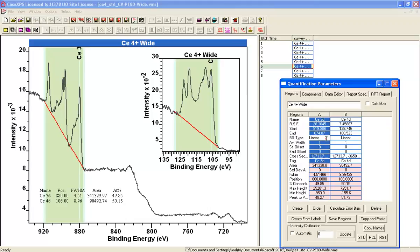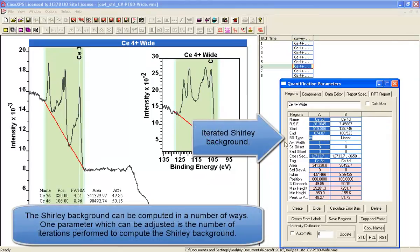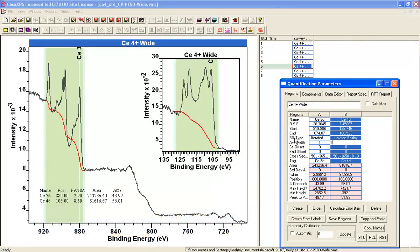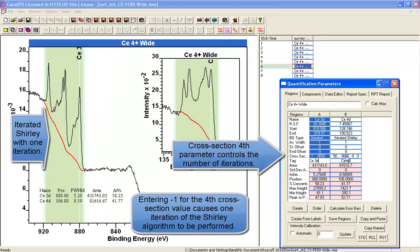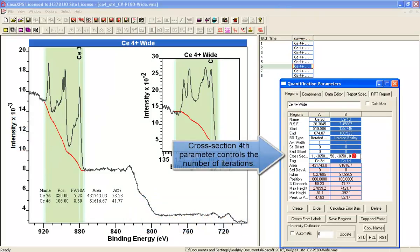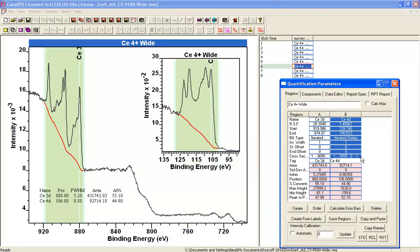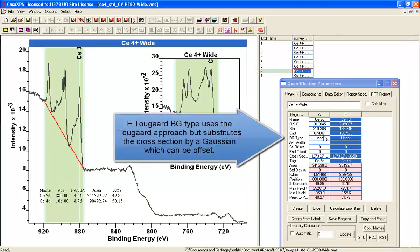Now, what we'll do is look at an alternative form of the Shirley background, which is an iterative Shirley background, where we can alter the number of iterations used in the calculation of this Shirley background. It starts off cutting through the data. When you limit the number of iterations, you can stop the background from cutting through the data, but it's probably still not correct.